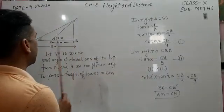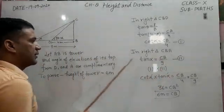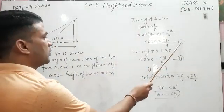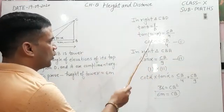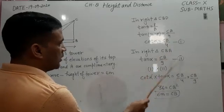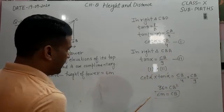Now divide equation 1 by equation 2. You get cot theta times tan theta equals CB upon 4 times CB upon 9.